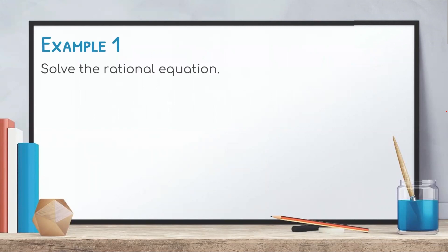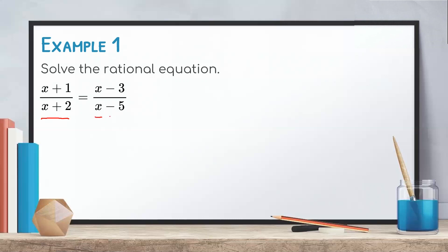Let us have an example. Solve the rational equation (x + 1)/(x + 2) = (x − 3)/(x − 5). Notice that in this given, there is only one rational expression on both sides of the equation. If this is the case, we can easily eliminate the denominator by cross-multiplication.